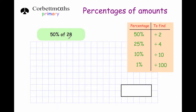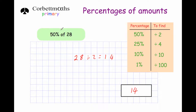Our first question says: work out 50% of 28. To get 50% of a number you divide by 2, so 28 divided by 2 is 14 — our answer is 14. If the number is odd, when you halve it you will get a 0.5.